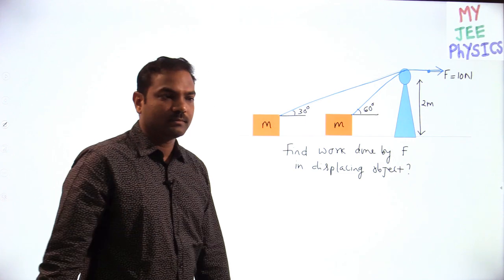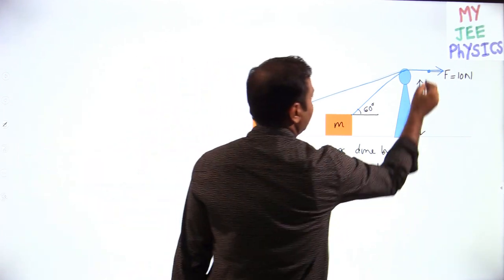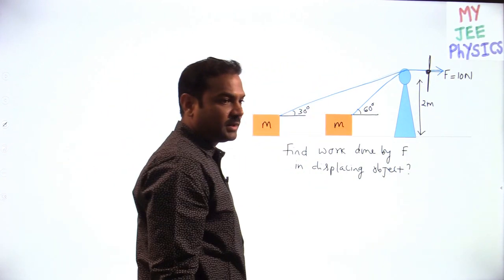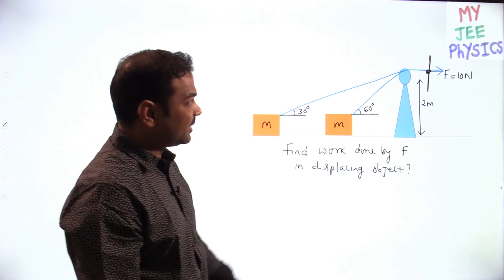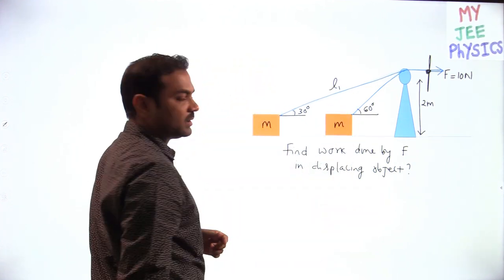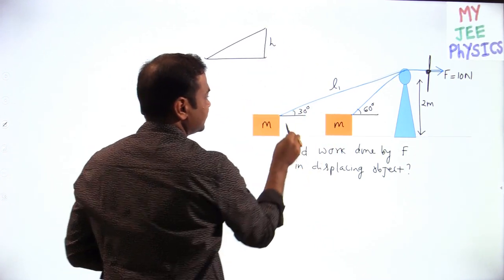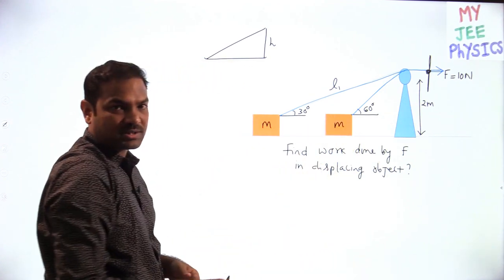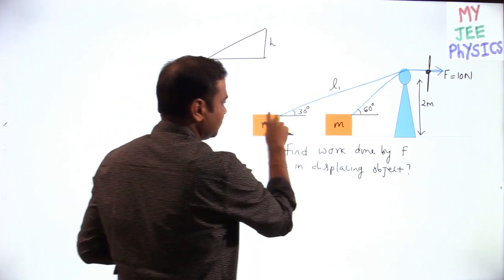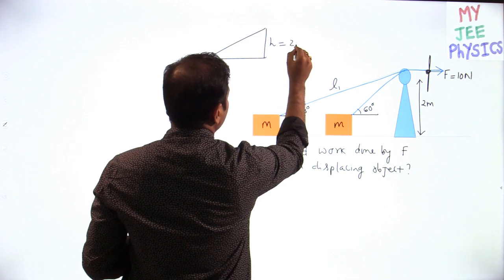Object mass is not given. Initially this is the point where force application is started — this is the point of application. To find the work done, we require the displacement of this point of application. Initially the length of the string is L1. This height is h = 2 meters (block is a point particle). The angle is 30 degrees, so sin 30 = 2/L1, giving L1 = 4 meters.